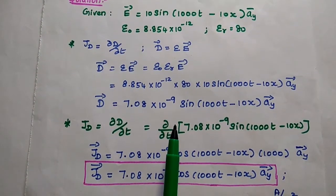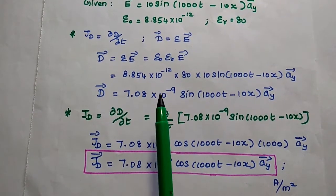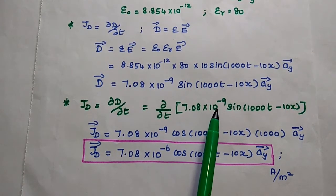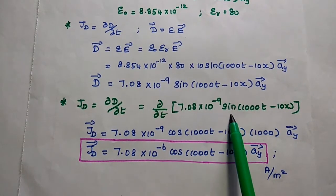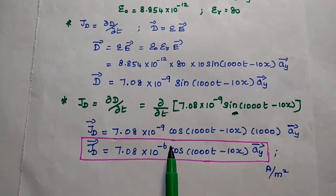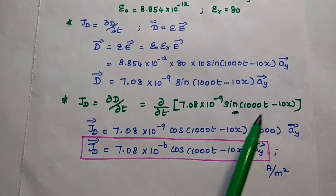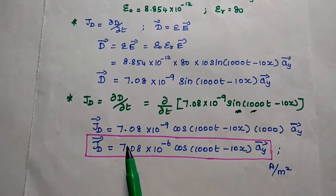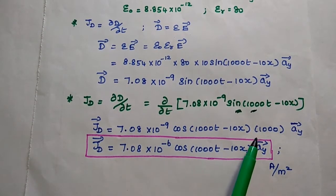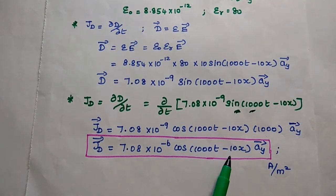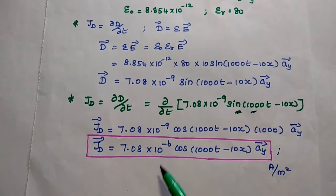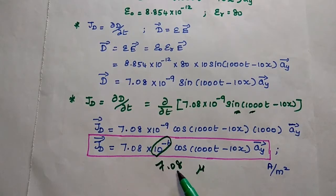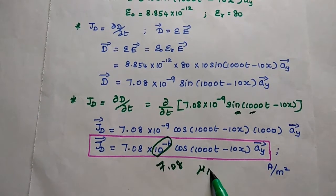Next, we find the displacement current density by differentiating D with respect to time. The constant 7.08 × 10⁻⁹ remains, and differentiating sin gives cos. We get cos(1000T − 10X) multiplied by 1000, giving 7.08 × 10⁻⁶ cos(1000T − 10X) aY. This can be written as 7.08 cos(1000T − 10X) aY micro amps per meter squared.